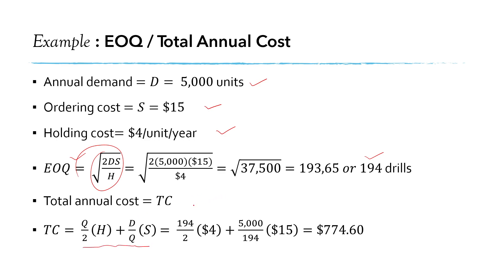We plug in the values for Q, D, H and S, and the value of total annual cost is $774.60. And this is how we calculate EOQ and total annual inventory cost.